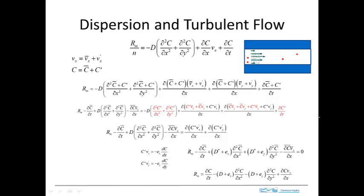Dispersion is also important in turbulent flow. To see how that works, let's start with this conceptual model. We have a flow in a conduit with a velocity distribution shown by these arrows. This velocity distribution alone would cause some dispersion because particles closer to the center move faster than particles closer to the wall, giving longitudinal dispersion. But in addition, in turbulent flow, we have these eddies, which are perturbations in the flow, and those also contribute to dispersion.